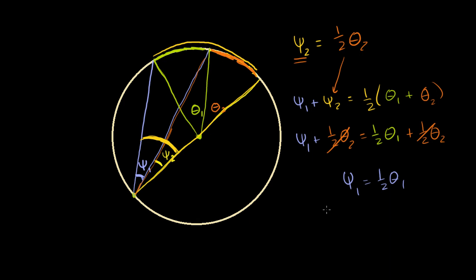And now we are done. We've proven that the inscribed angle is always one half of the central angle that subtends the same arc — regardless of whether the center of the circle is inside the angle, outside the angle, or whether we have a diameter on one side. Any other angle can be constructed as a sum of cases we've already handled. Now we can build on this result to do some more interesting geometry proofs.